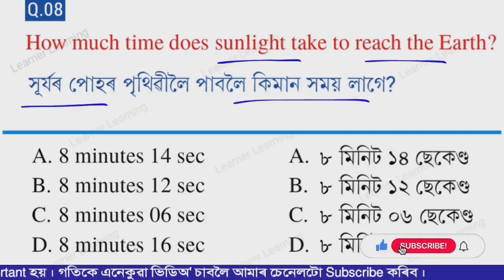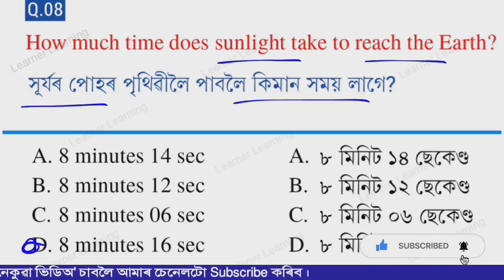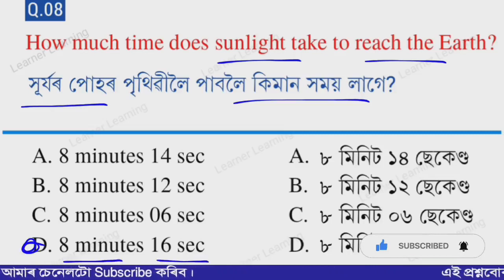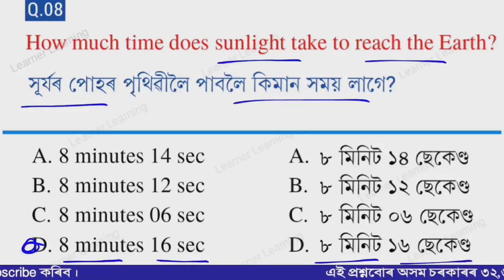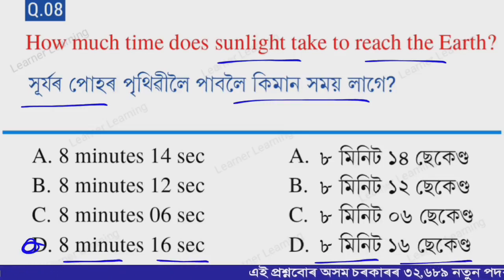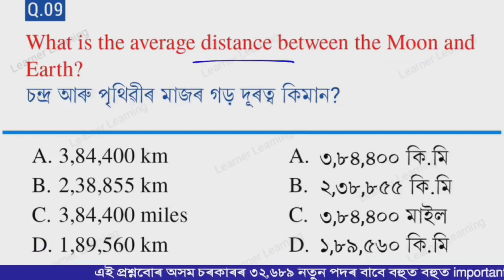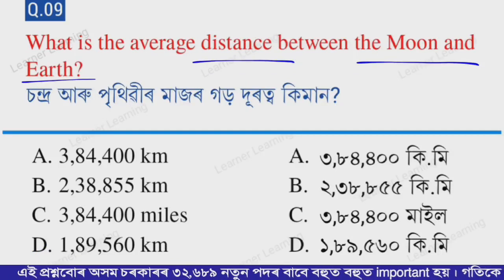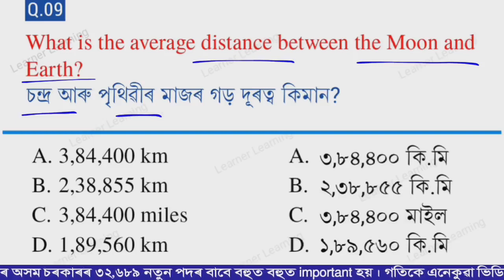Next question: How much time does sunlight take to reach the Earth? Select from the options. Option D — eight minutes 16 seconds. This is a very important question — sunlight takes 8 minutes 16 seconds to reach the Earth.